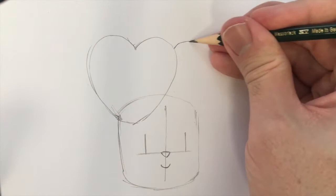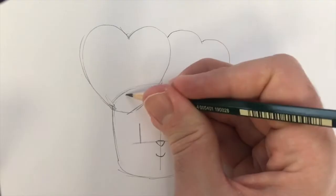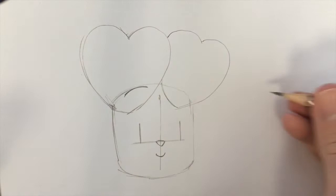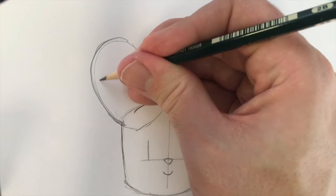His ears are heart shapes - a heart there and a heart just tucked behind it. Don't forget Bunny's eyebrows. They're just little curved lines.